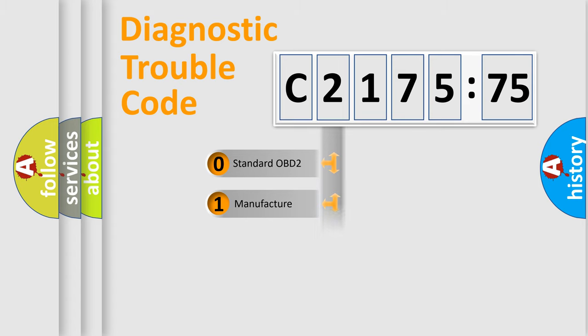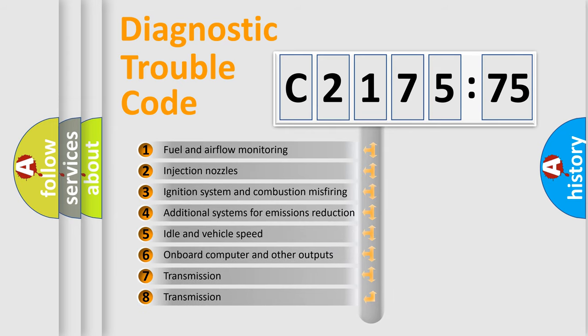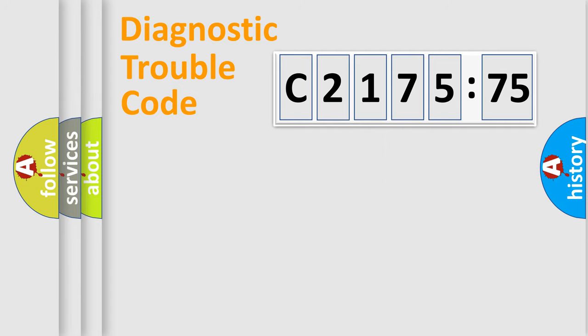If the second character is expressed as zero, it is a standardized error. In the case of numbers 1, 2, 3, it is a more prestigious expression of the car specific error. The third character specifies a subset of errors. The distribution shown is valid only for the standardized DTC code.